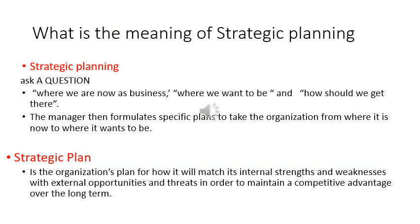What is the meaning of strategic planning? Strategic planning asks three questions: Where are we now as an organization or business? Where do we want to be? And how should we get there? After that, organizations formulate specific plans to take the organization from where it is now — the current situation — to where it wants to be.